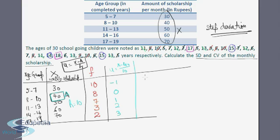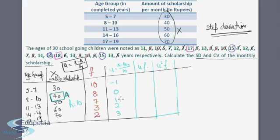Next I need to find u × f and u² × f. Using simple mental arithmetic: u × f gives −1 × 10 = −10, then 0 × 8 = 0, 1 × 7 = 7, 2 × 3 = 6, and 3 × 2 = 6. For u² × f: (−1)² × 10 = 10, 0² × 8 = 0, 1² × 7 = 7, 2² × 3 = 12, and 3² × 2 = 18.